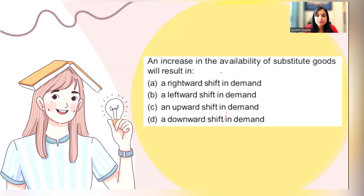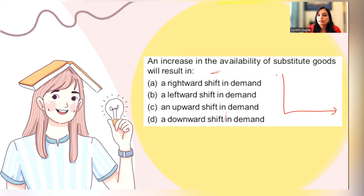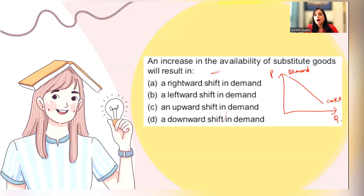Next question: an increase in availability of substitute goods. If substitute goods availability increases — let's say this demand curve represents Coke — this is quantity on one axis and price on the other, and this is the demand curve. Now what happens?